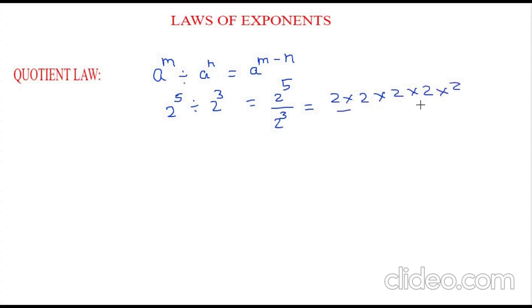So I am writing 2 five times divided by and I am going to write 2 three times. So now we can cross out the same numbers from the numerator and the denominator. So our final answer is 2 square.